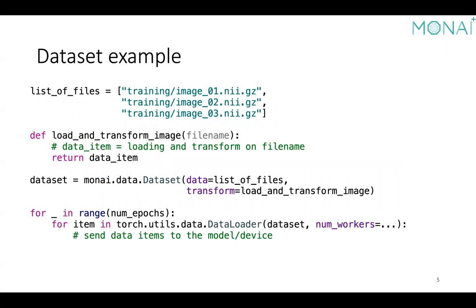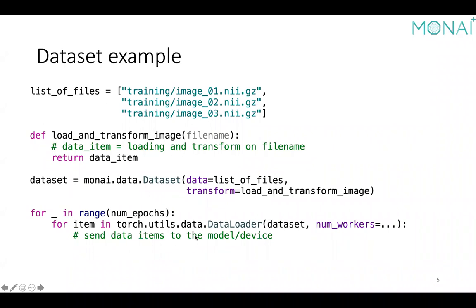Here is a typical usage. The data collection is a list of image file names indicating the actual images are stored somewhere in a specific medical image format. We write a pre-processing function to read these files into memory and apply some pre-processing. After defining the MONAI dataset with the sequence input and customized transformation, it can be directly used with a PyTorch built-in data loader. For many epochs of training, we sample a small subset of images from the dataset, pre-process on the fly, and send the retrieved items to the device.